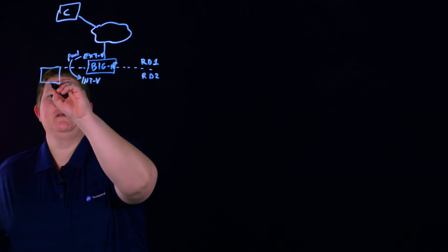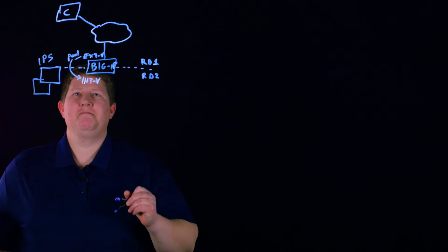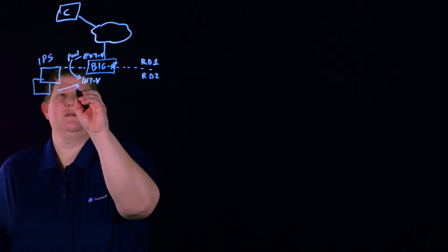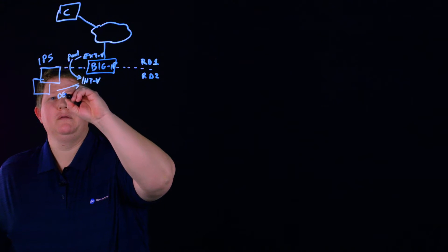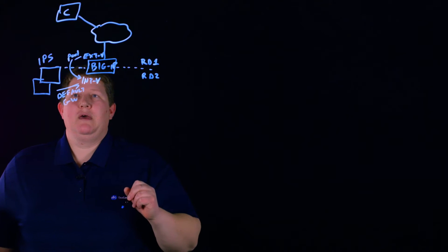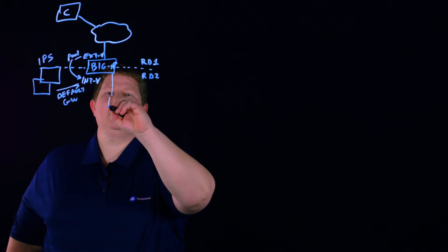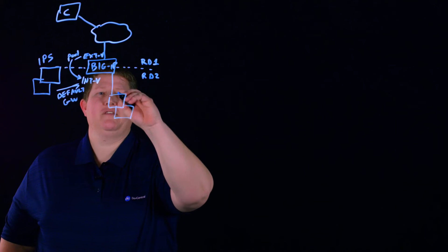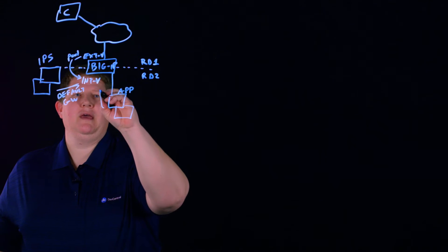The way we're going to route that is we have our IPS servers over here and they have a default gateway to the BIG-IP. On this side of the equation we have the app servers and they also have a default gateway to the BIG-IP.